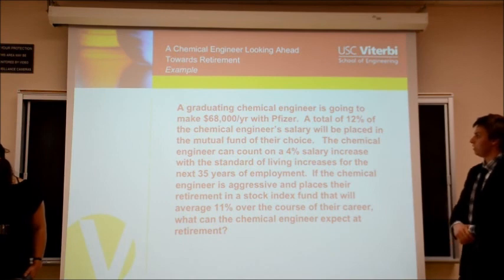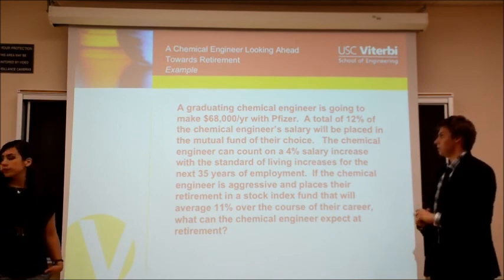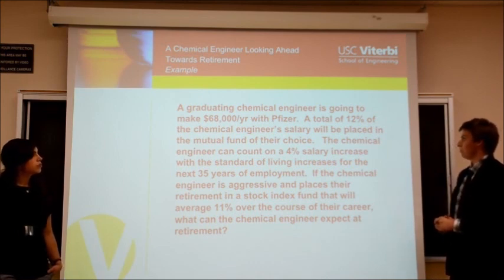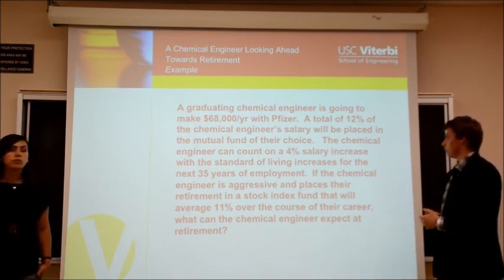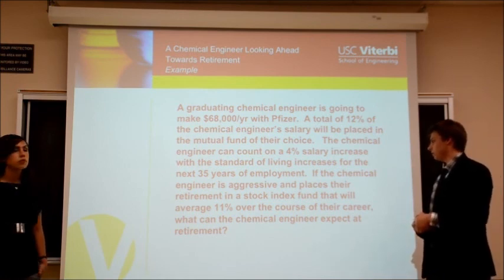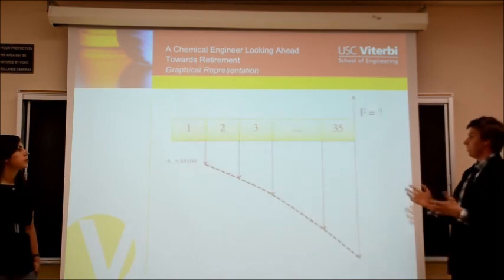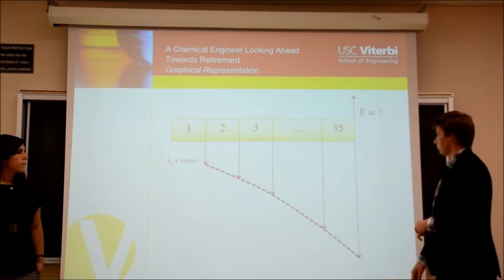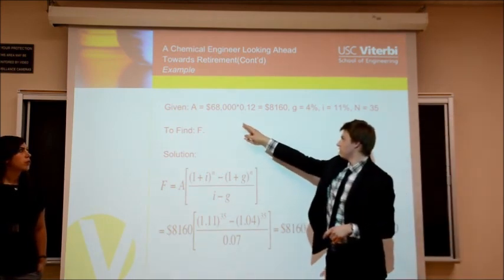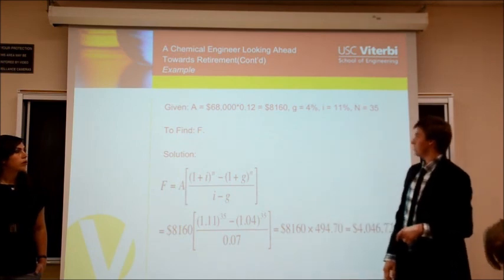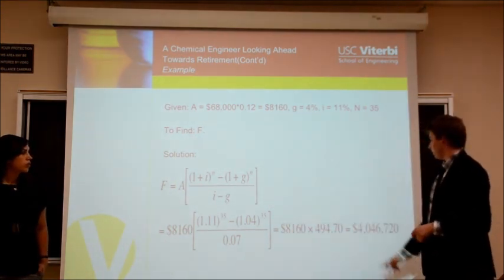We have an example illustrating how we can use future worth in a problem. A graduating chemical engineer is going to make $68,000 a year with Pfizer. A total of 12% of the chemical engineer's salary will be placed in a mutual fund. The chemical engineer can count on a 4% salary increase for the next 35 years of employment. If the chemical engineer places their retirement in a stock investment averaging 11% over the course of their career, what can the chemical engineer expect at retirement? A cash flow diagram shows we want the future amount. We have the initial annuity and the number of periods. At the first year they're going to make $68,000, and 12% of that is going into a mutual index fund. We have the growth rate, interest rate, and number of periods. We plug into the equation and get just over $4 million.